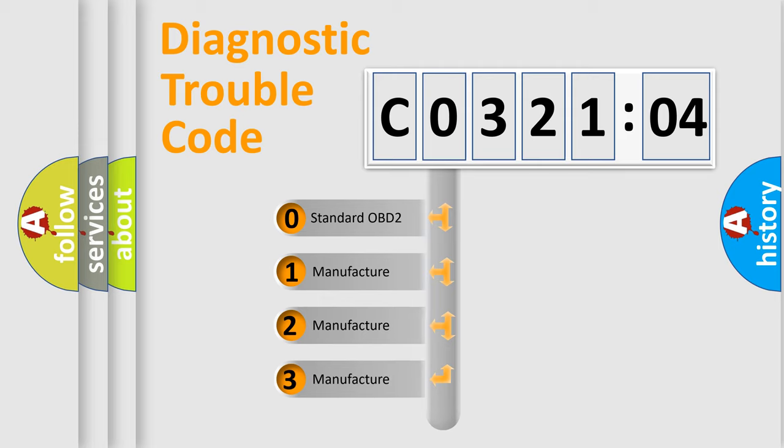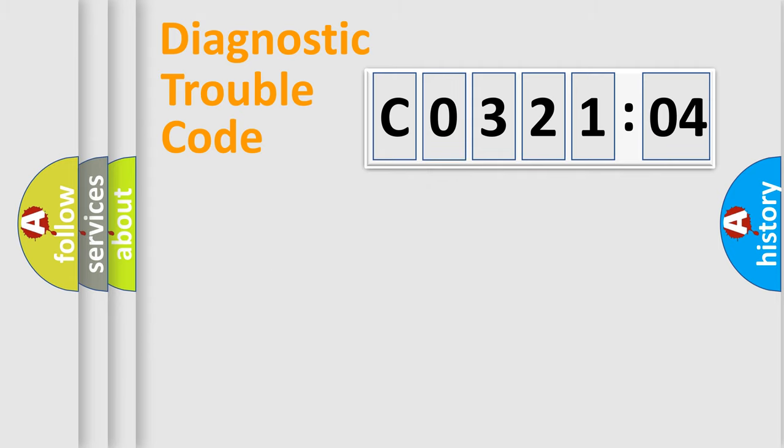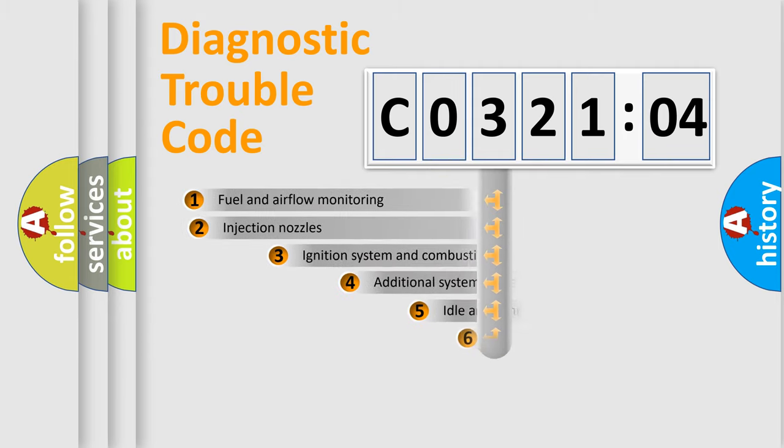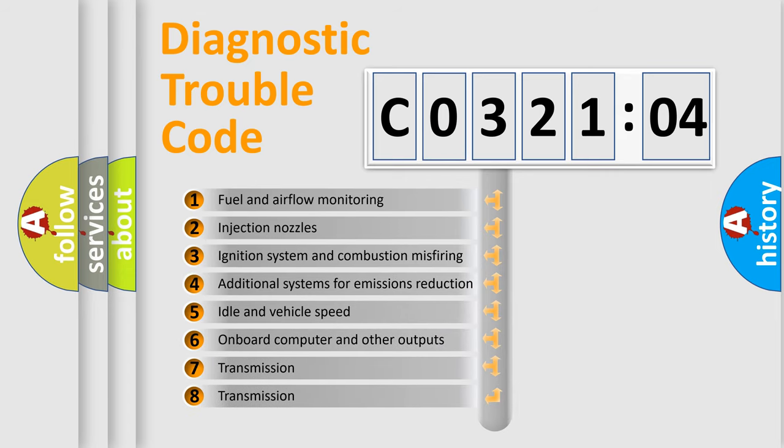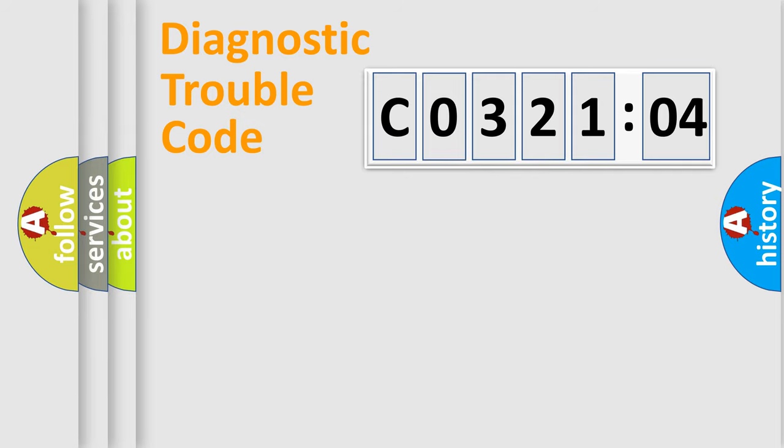If the second character is expressed as zero, it is a standardized error. In the case of numbers 1, 2, or 3, it is a manufacturer-specific expression of the car-specific error. The third character specifies a subset of errors. The distribution shown is valid only for the standardized DTC code. Only the last two characters define the specific fault of the group.